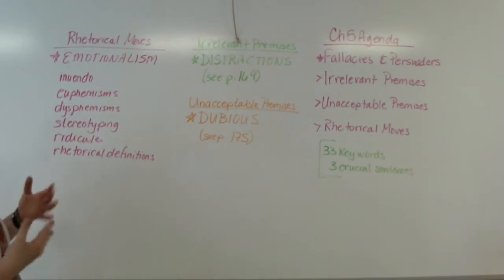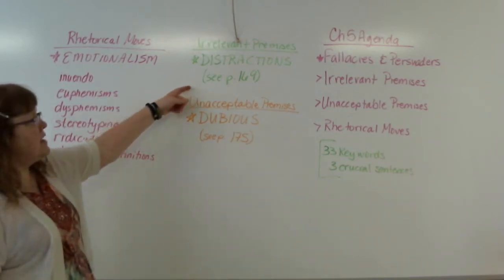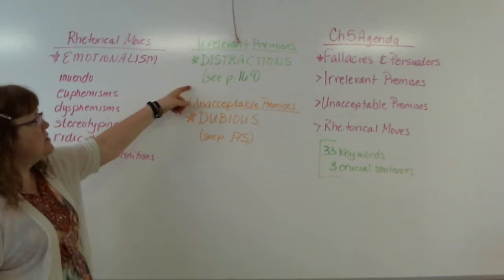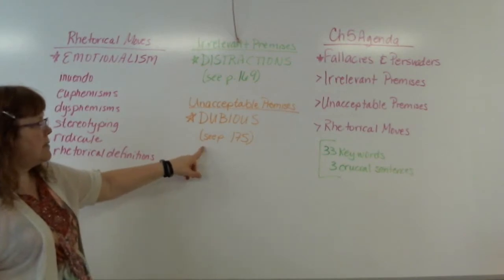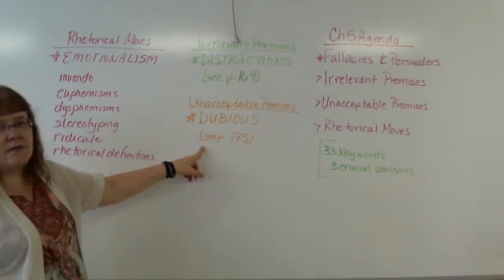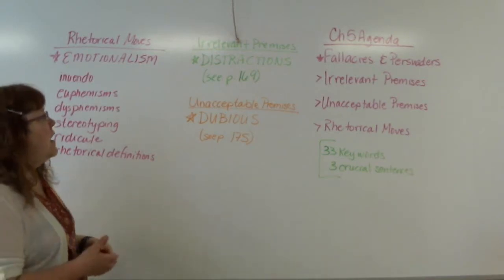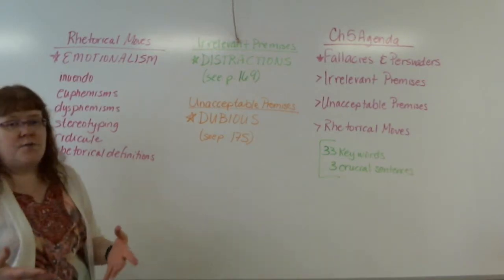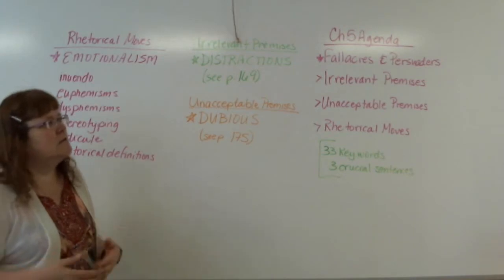There's a list of definitions — kind of short and sweet definitions — for the irrelevant premises on page 169. There's a same kind of list for unacceptable premises on page 175. This is all in the fifth edition book. If you have a fourth edition book, you can still use it, but page numbers are going to be wrong, so just keep looking.